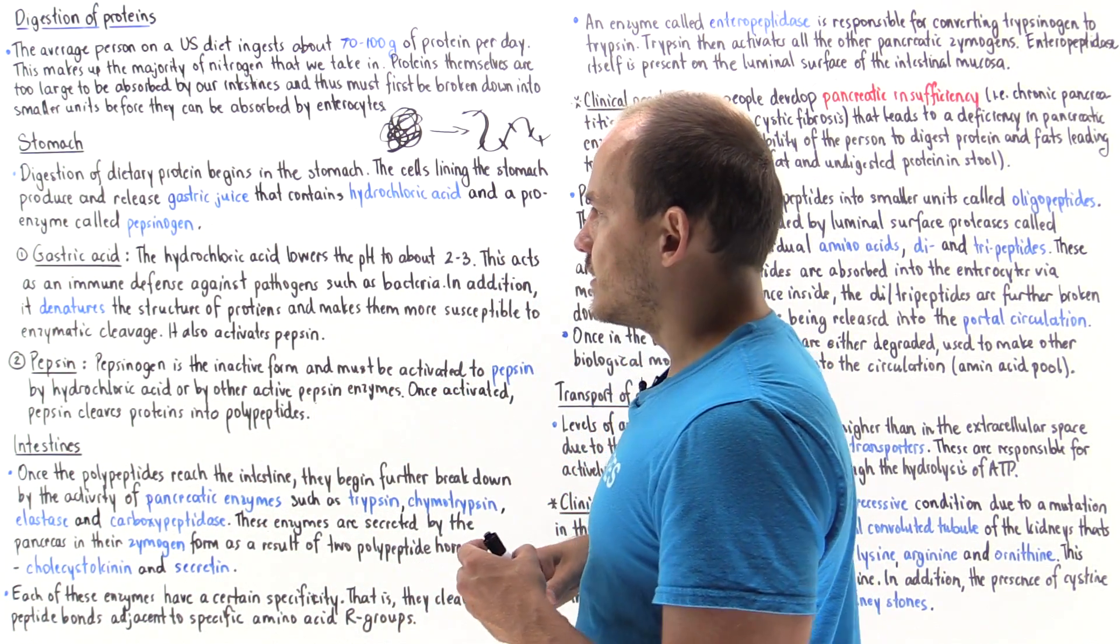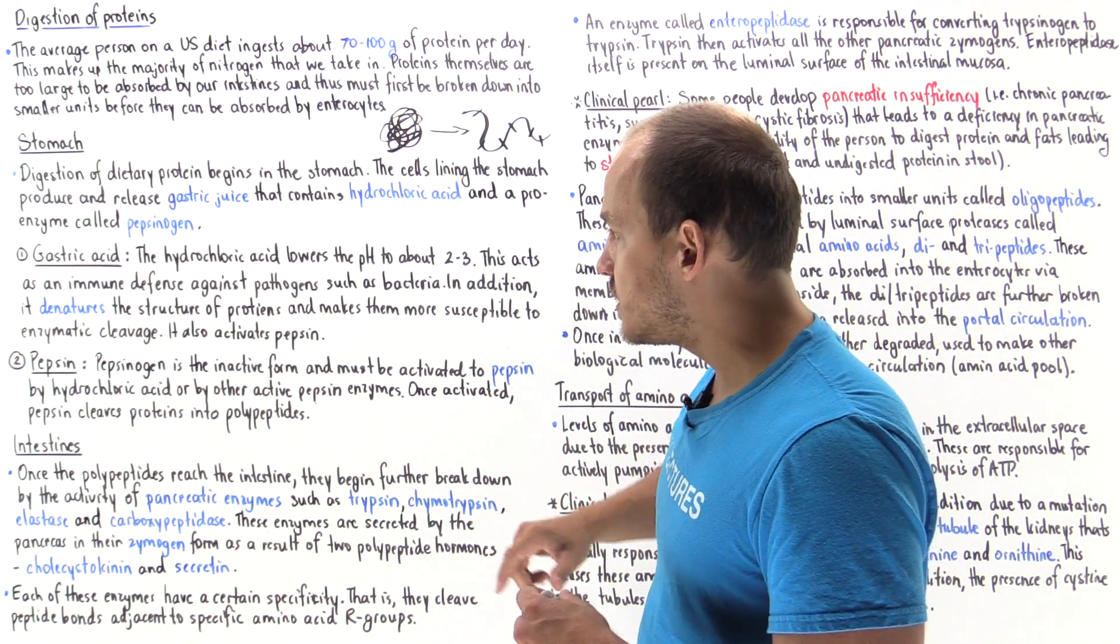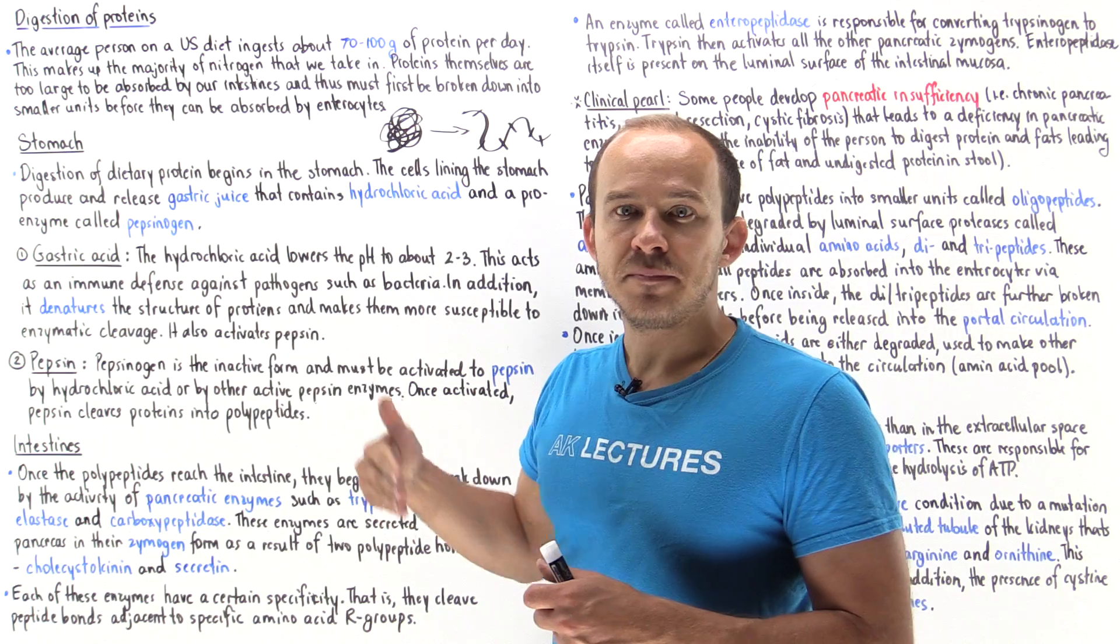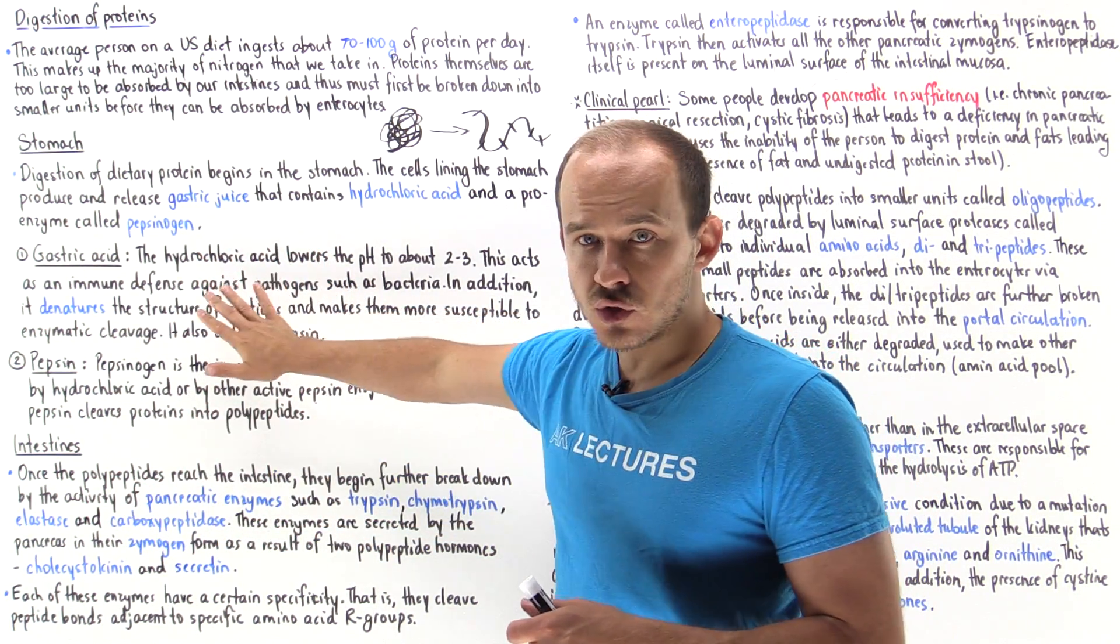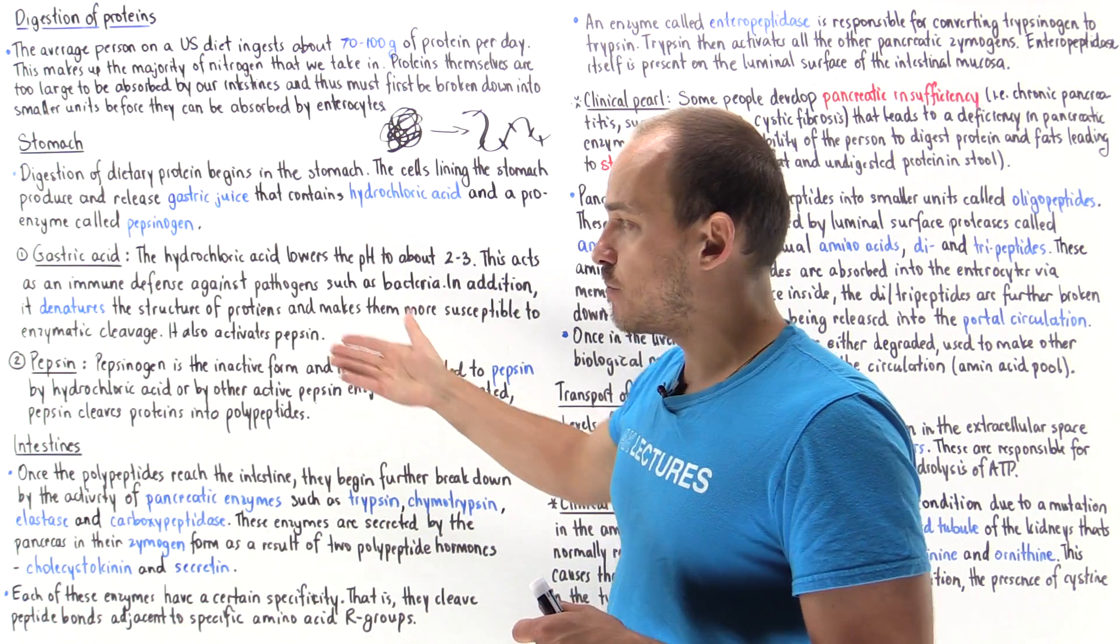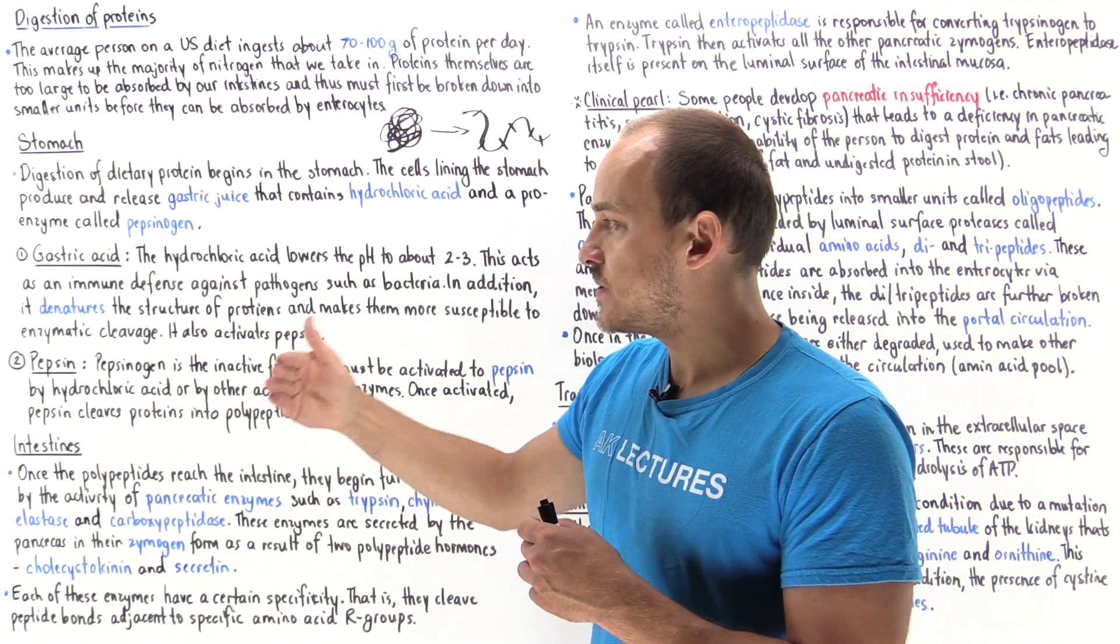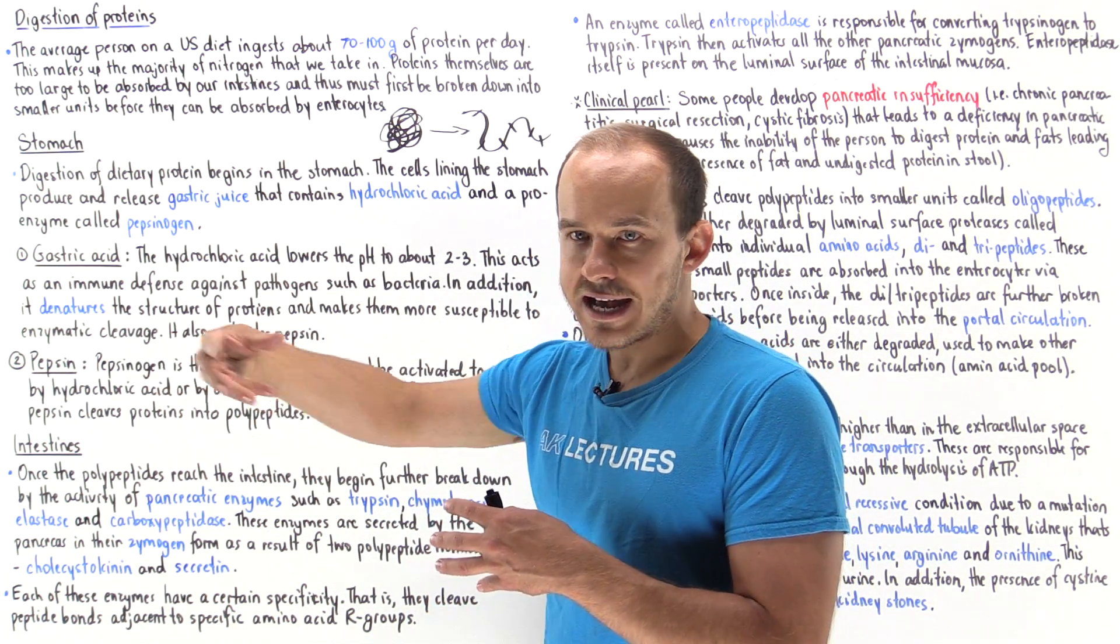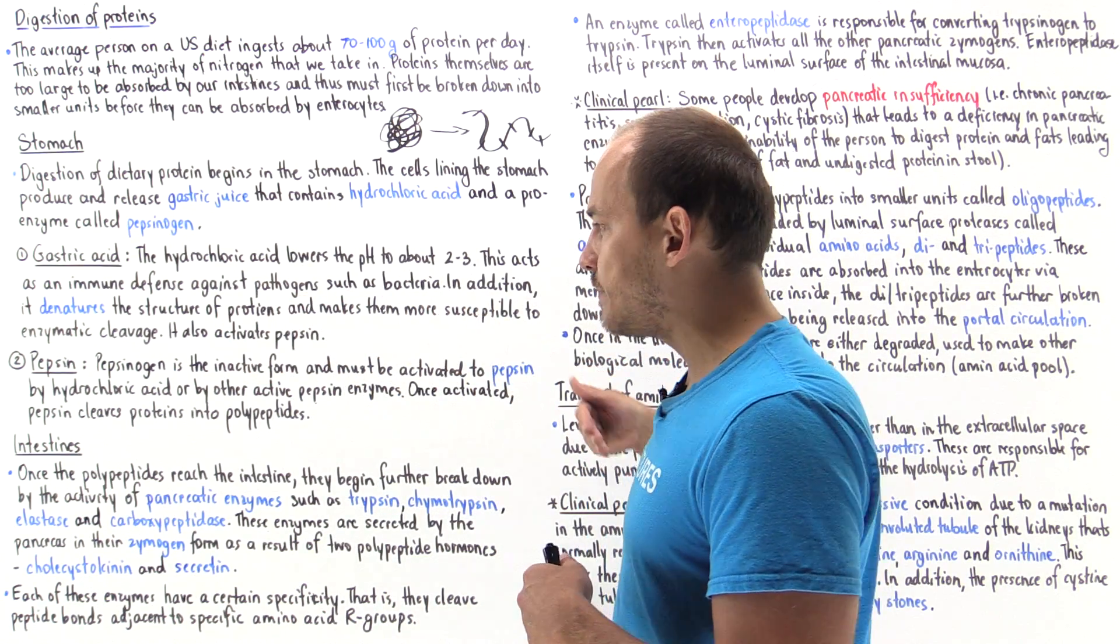One important proteolytic enzyme that is secreted by cells within the stomach called chief cells is pepsinogen. Pepsinogen is the inactive form of pepsin. Hydrochloric acid actually converts pepsinogen into pepsin. Pepsin is produced in the pepsinogen form by chief cells, released into the gastric juice, and hydrochloric acid then converts it into pepsin.